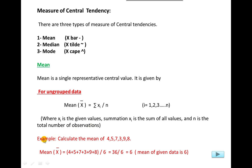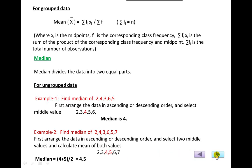This is an example of ungrouped data: calculate the mean of 6 given observations. Mean = (4 + 5 + 7 + 3 + 9 + 8) divided by 6. The mean of the given data is 6. For grouped data, we now use a different formula.